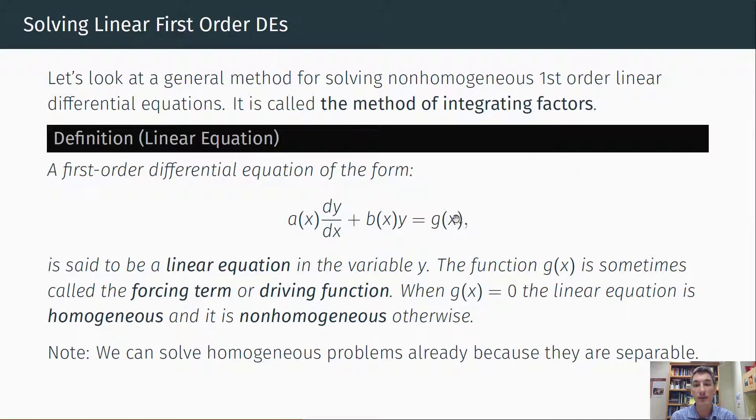Now, when g(x) is in fact zero, then you could subtract b(x)y to the other side, divide by a(x), and you would essentially have a separable differential equation. And we already learned how to solve separable differential equations, at least if they're first-order. And so, in some sense, what we're really interested here is learning how to solve the non-homogeneous ones. Those are sort of the more interesting case, just because the other ones are already separable.